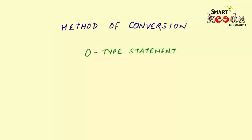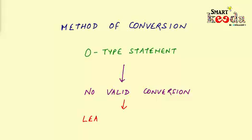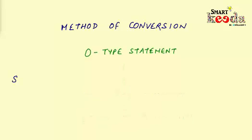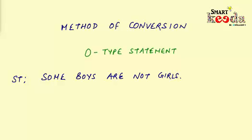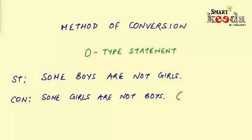Now for the O-type statement — always keep in mind that there is no valid conversion of an O-type statement. An O-type statement leads to possibilities, which we'll study in a separate video. For example, if the statement is 'some boys are not girls' and a conclusion is given as 'some girls are not boys,' you should immediately mark it as wrong, because a definite conversion of an O-type statement is not possible.